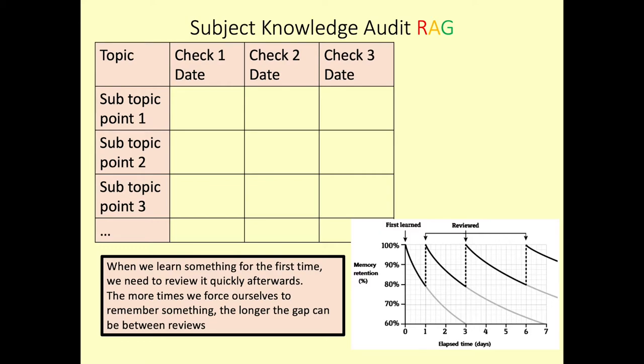What we've got here is a graph showing the forgetting curve. This shows that the more times we review it, the longer we can leave a gap between reviews. But it's really important that we continually review this. Even if we think it's green at one stage, we might forget it by the time it comes to further checks. So it is really important to think: are we confident with each of these topic points?